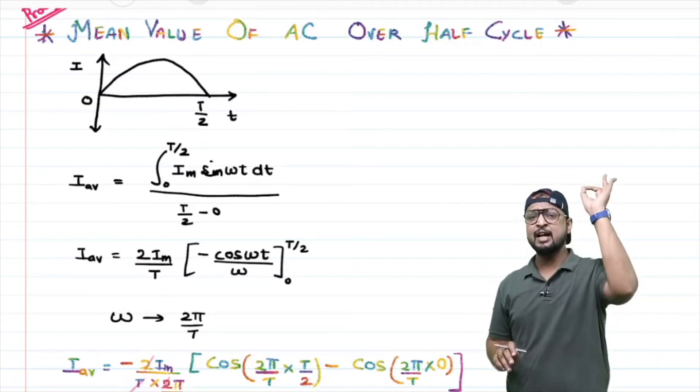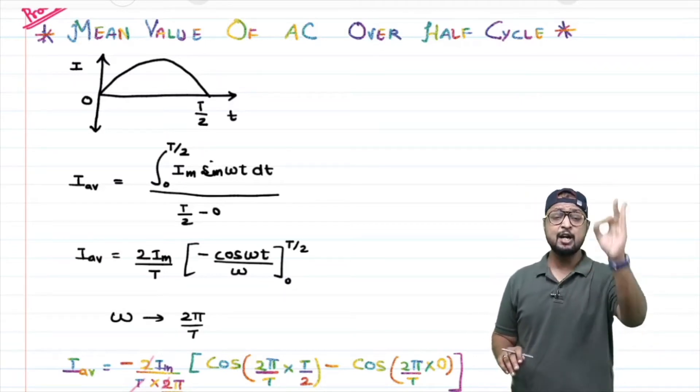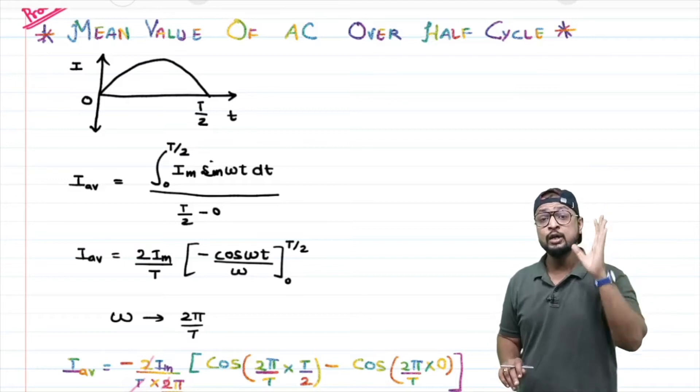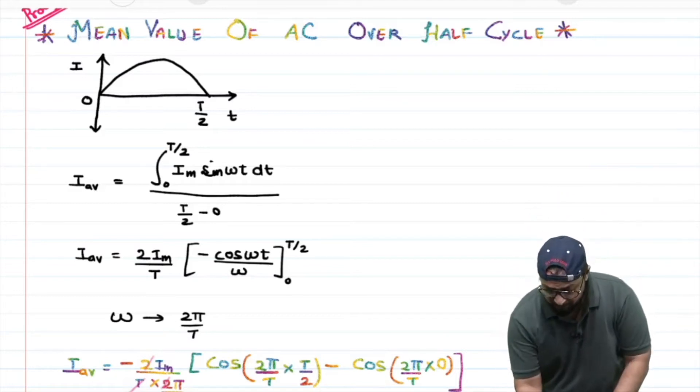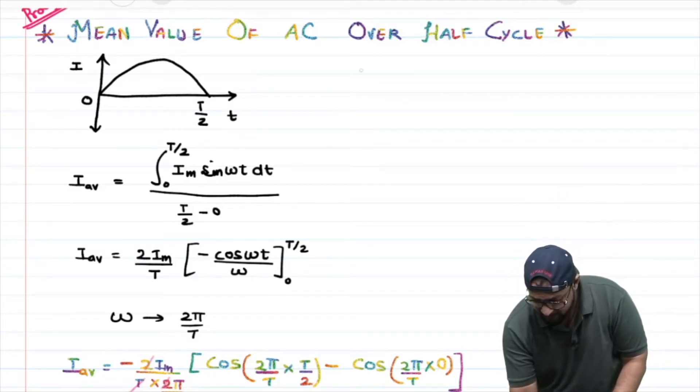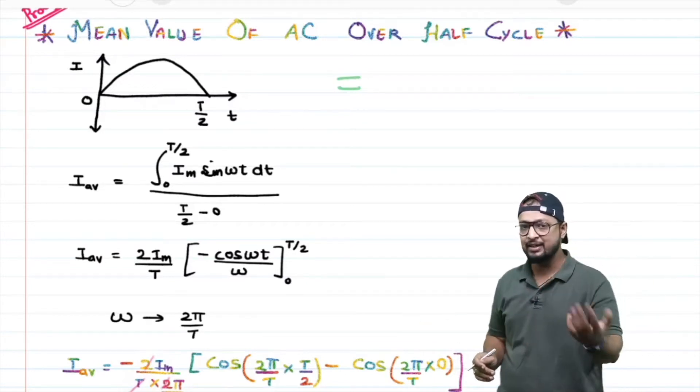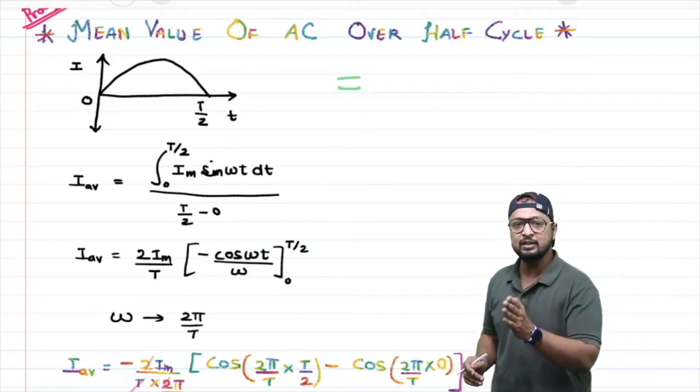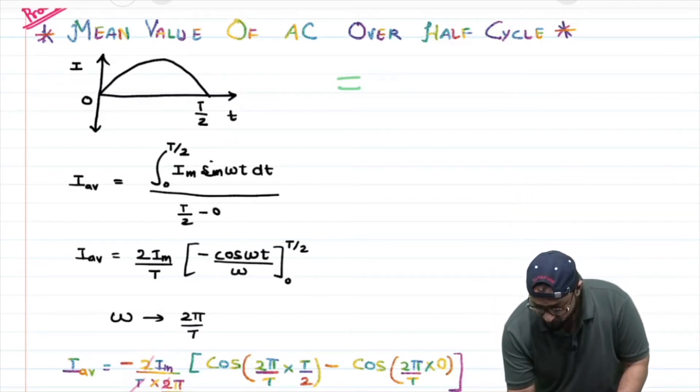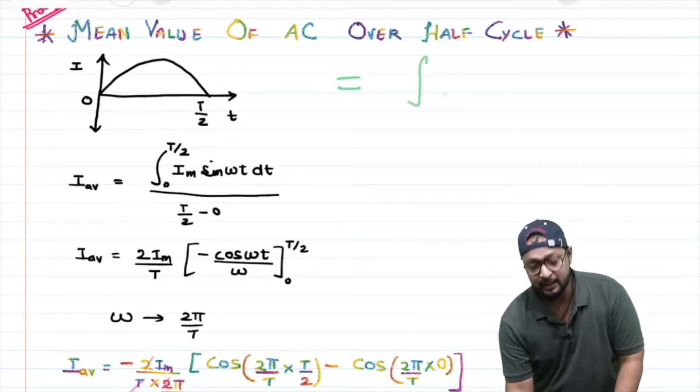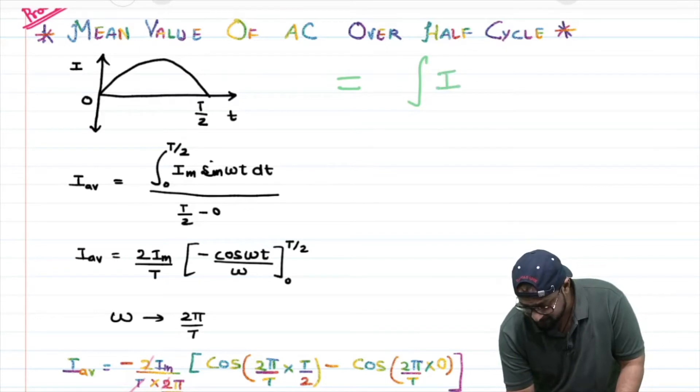When you start the mean, when you start the average - if you start the average of 1, 2, 3, the sum should be taken. So when you start the mean, you start with I dt...